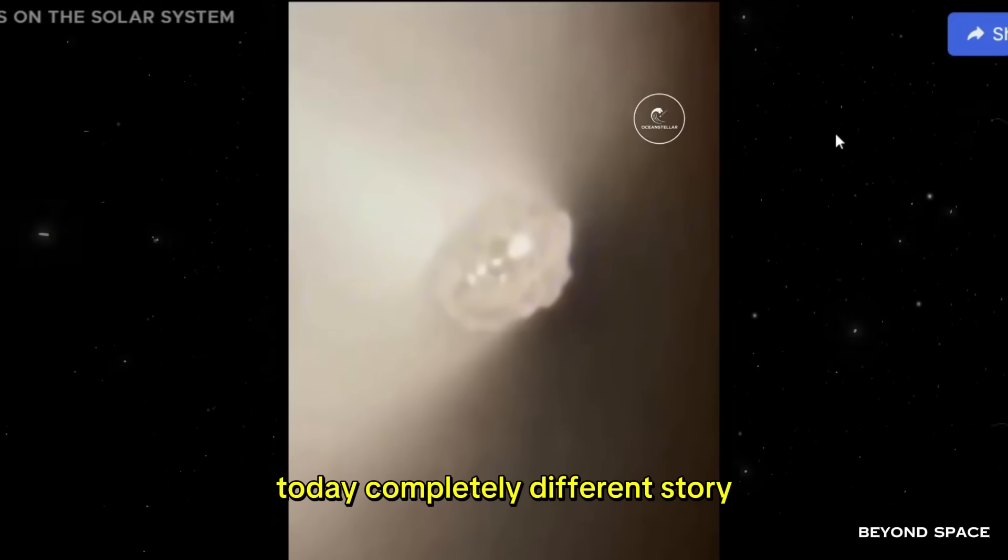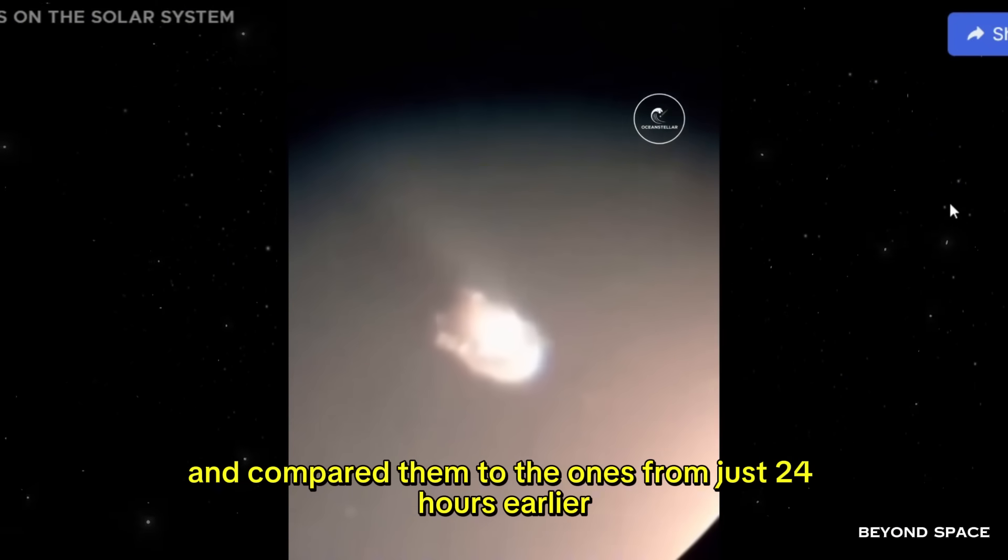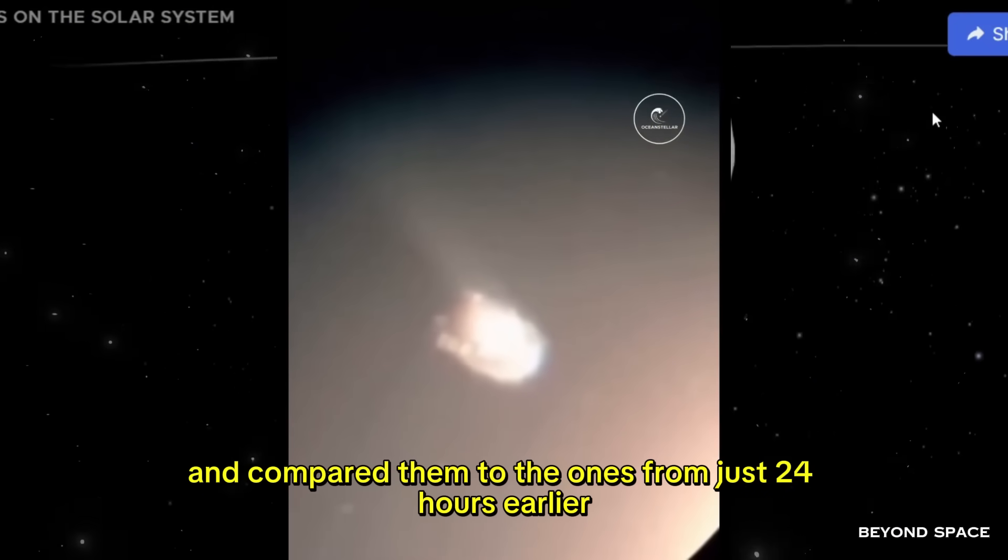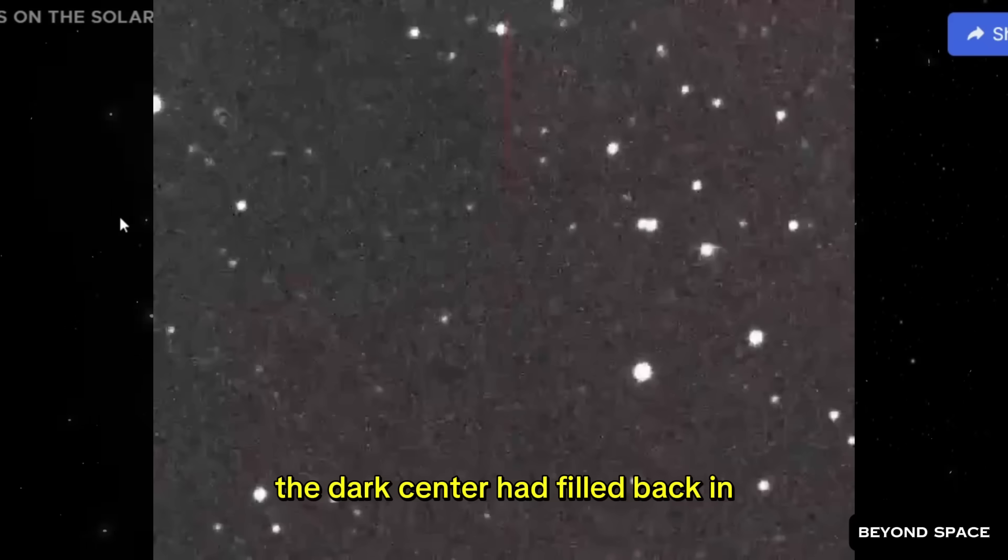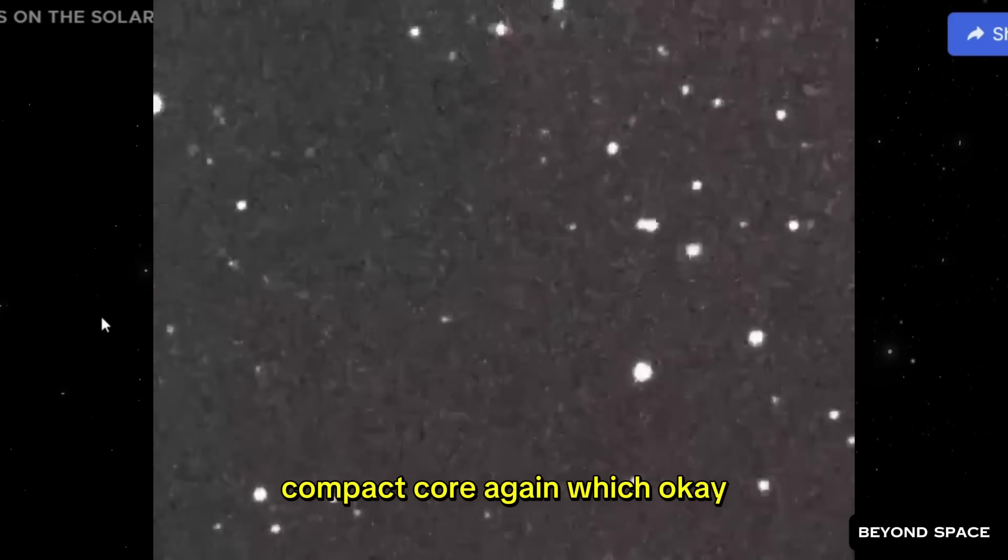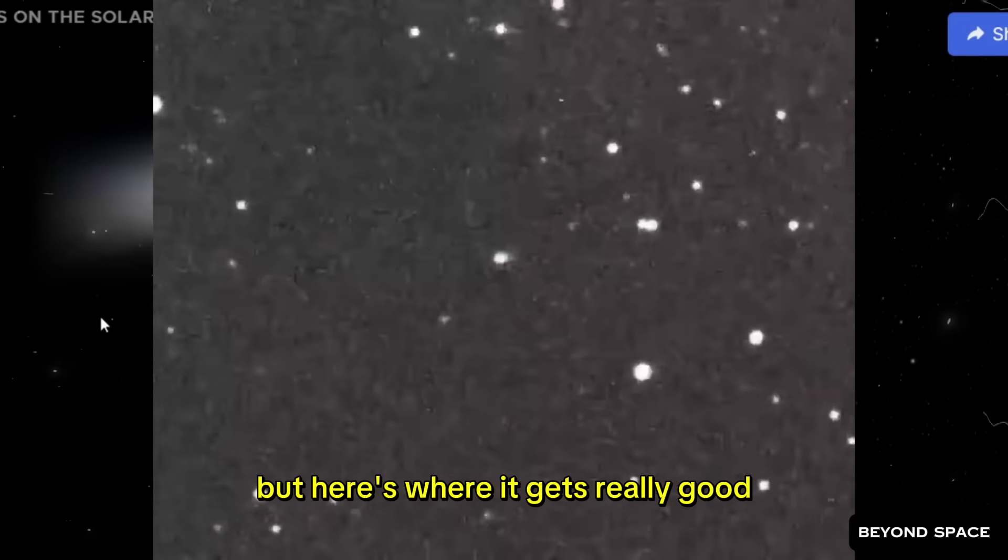Today? Completely different story. When the team at NASA stacked the new images and compared them to the ones from just 24 hours earlier, the donut was gone. Just gone. The dark center had filled back in, and now there was a bright, compact core again. Which, okay, that's already interesting, but here's where it gets really good.